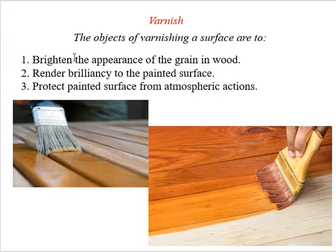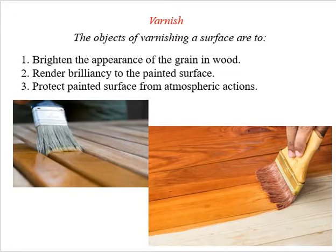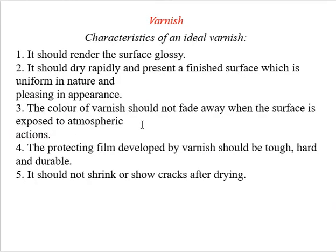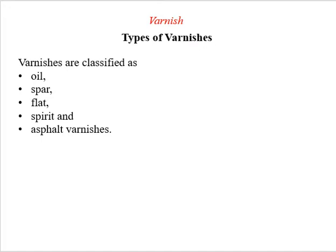The objectives of varnishing include brightening furniture and protecting painted surfaces. As seen in the illustration, varnish is applied using a brush to make furniture shinier while protecting the underlying paint. Characteristics of an ideal varnish include: it should not shrink, the protective film should be tough, hard, and durable, and it should not fade when exposed to the atmosphere.